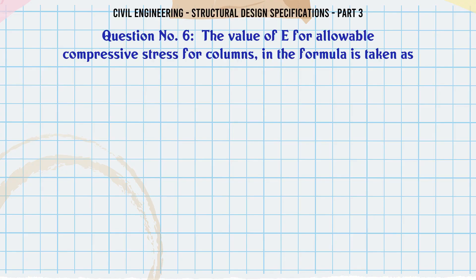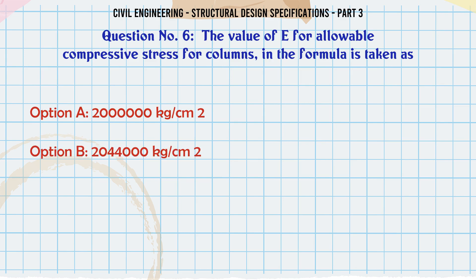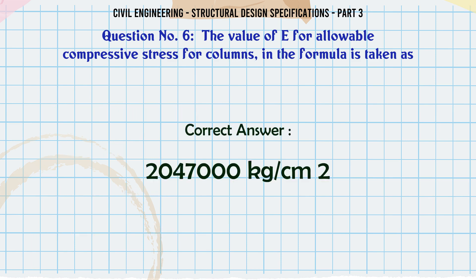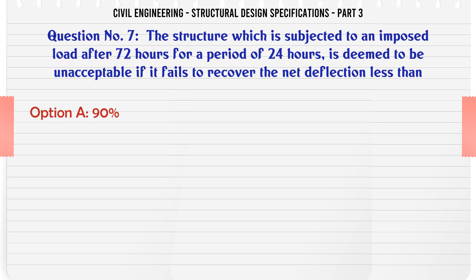The value of E for allowable compressive stress for columns in the formula is taken as: a. 20,00,000 kg/cm², b. 20,00,000 + 44,000 kg/cm², c. 20,00,000 + 45,000 kg/cm², d. 20,00,000 + 47,000 kg/cm². The correct answer is: 20,00,000 kg/cm².